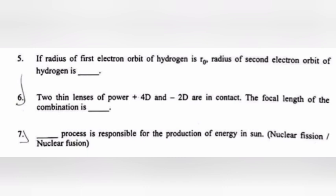Question 5: If radius of first electron orbit of hydrogen is R0, radius of second electron orbit of hydrogen is dash. Answer: 4R0. Question 6: Two thin lenses of power plus 4D and minus 2D are in contact. The focal length of the combination is dash. Answer: 0.5 M.